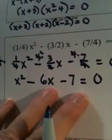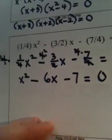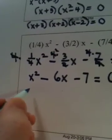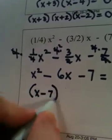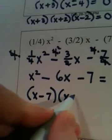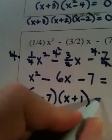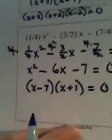Look what I have now, a very clean quadratic equation. And in fact, it factors beautifully as x minus 7, quantity, and x plus 1, quantity. Very nice.